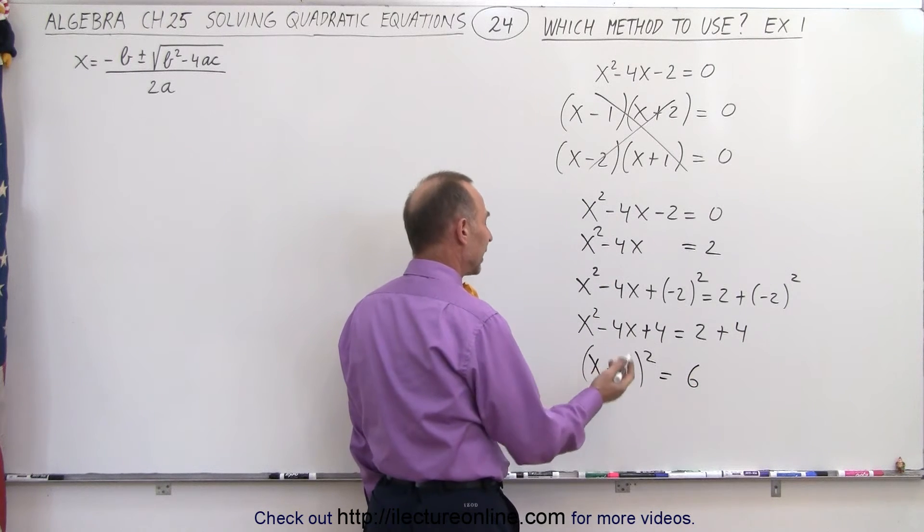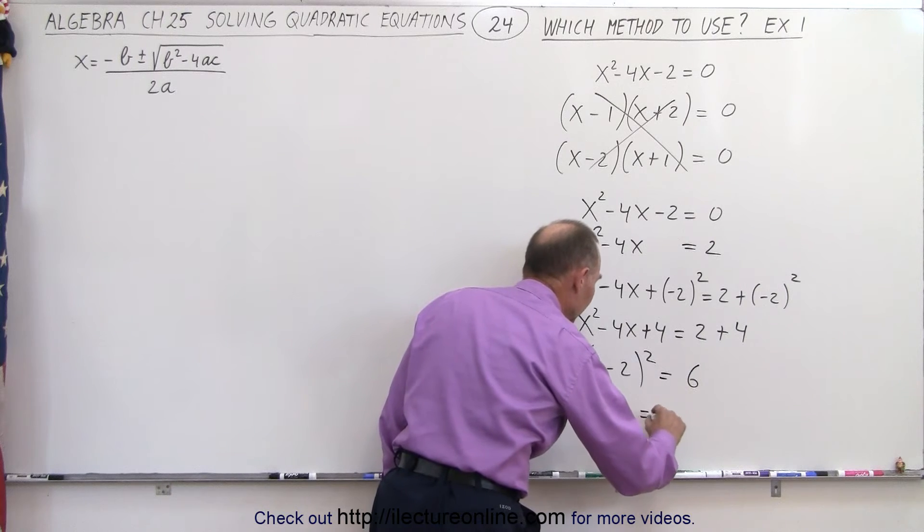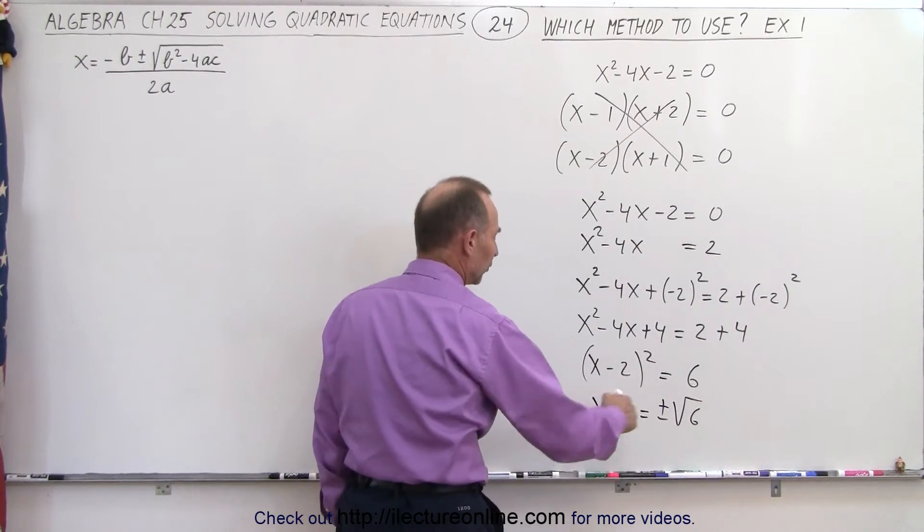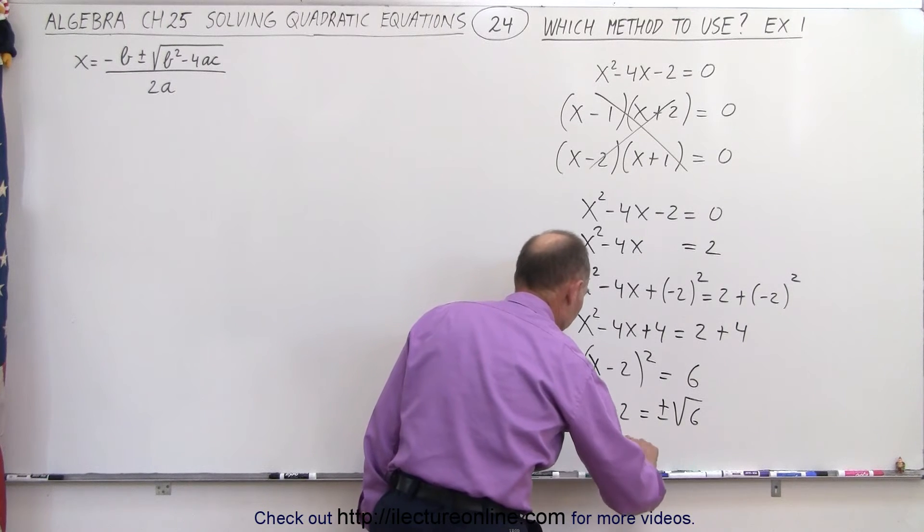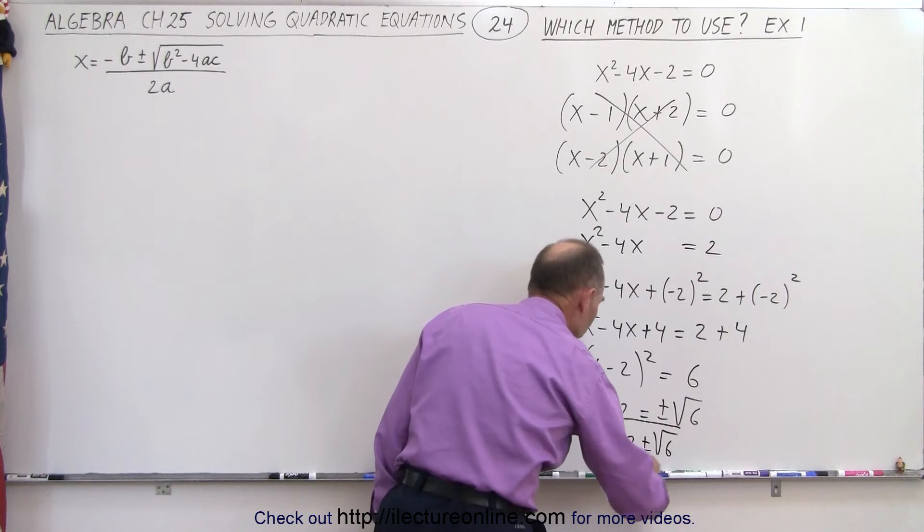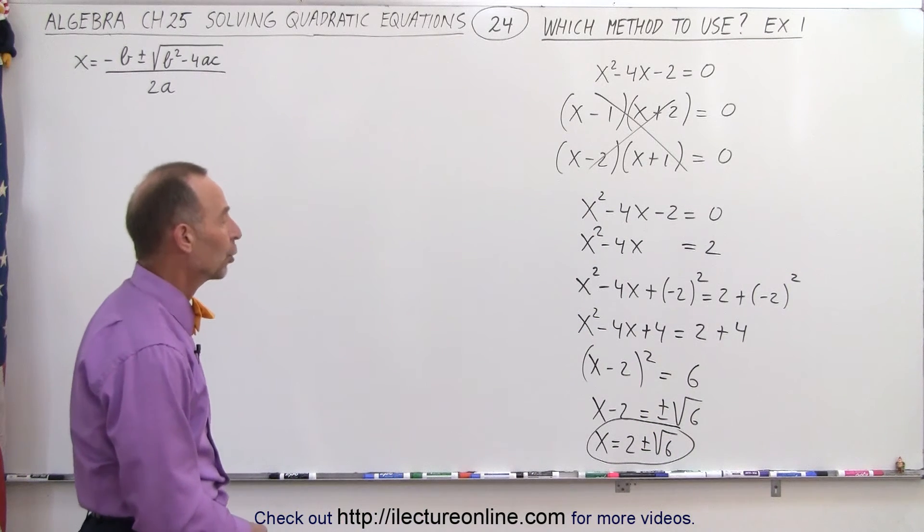And at this point I can take the square root of both sides. So it becomes x minus two is equal to plus or minus the square root of six. And then finally when I move the two across I get x is equal to two plus or minus the square root of six which gives me the two solutions to that particular quadratic equation.